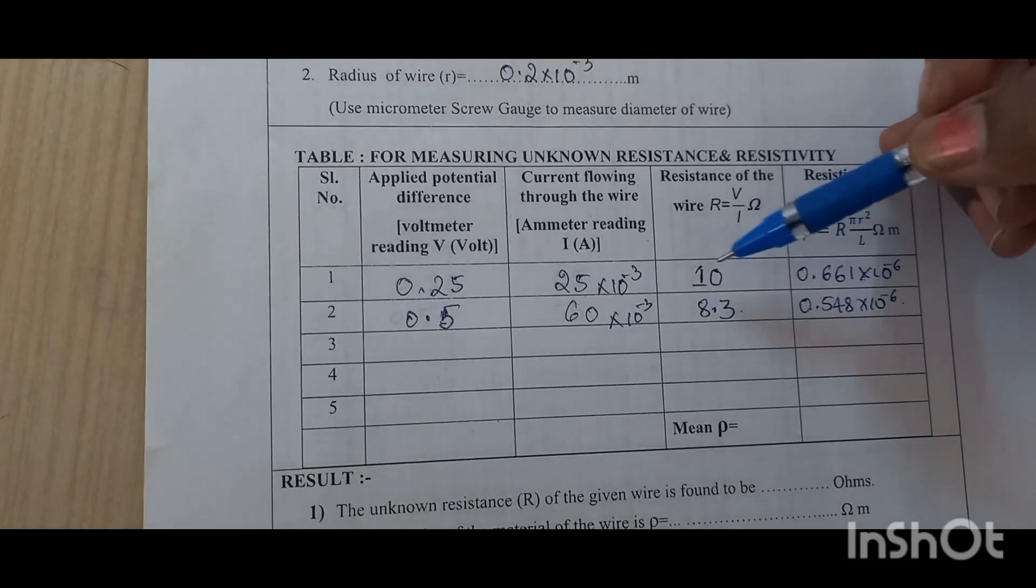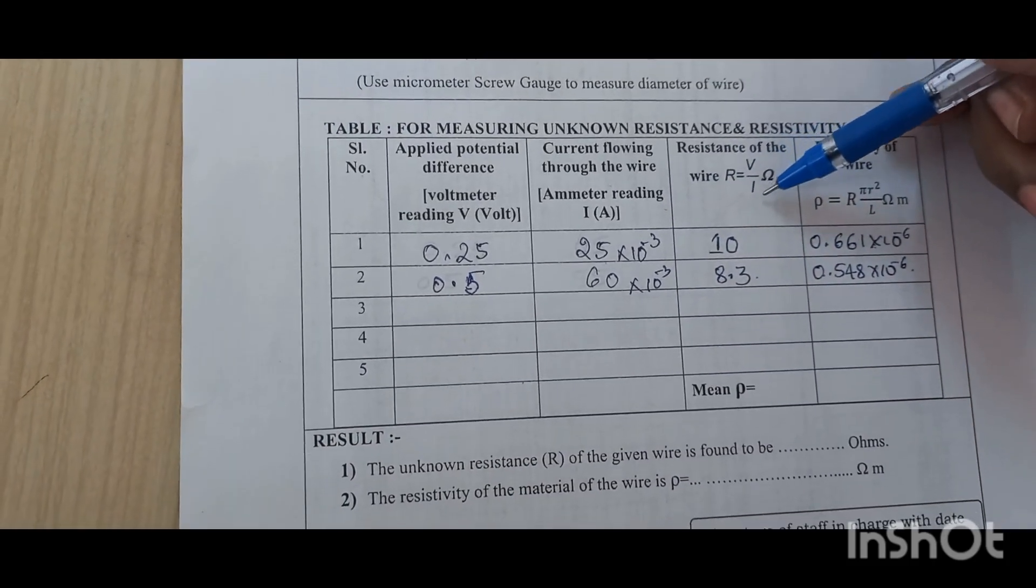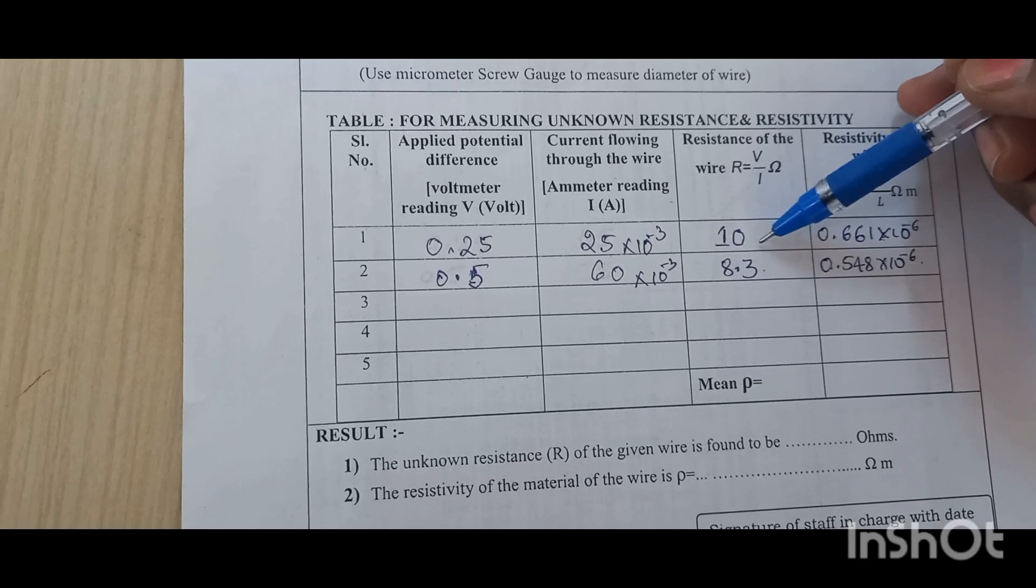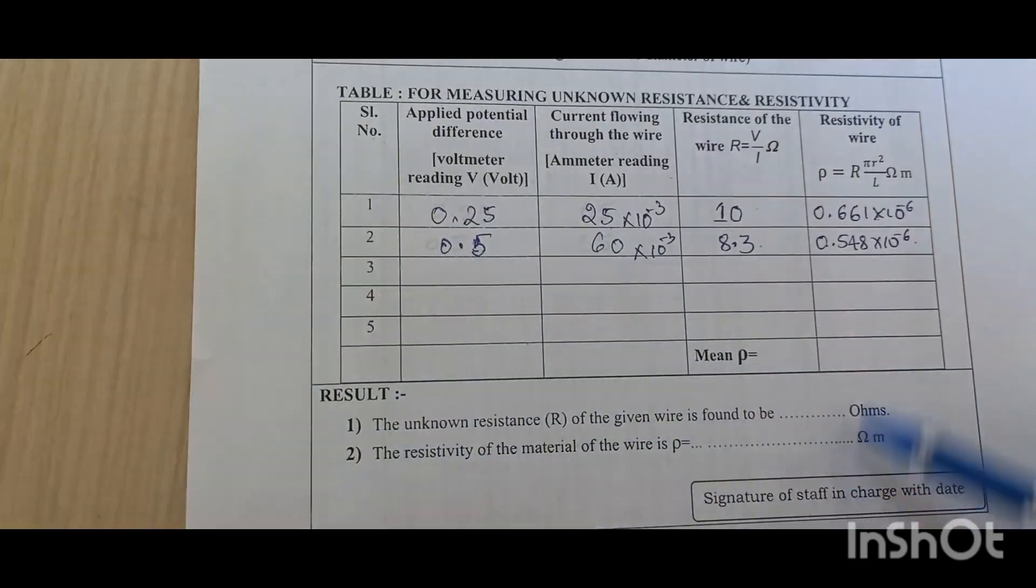After taking the readings, calculate R, that is V by I. So readings we have got like this, 10 and 8.3 and so on. We can take the other readings also.